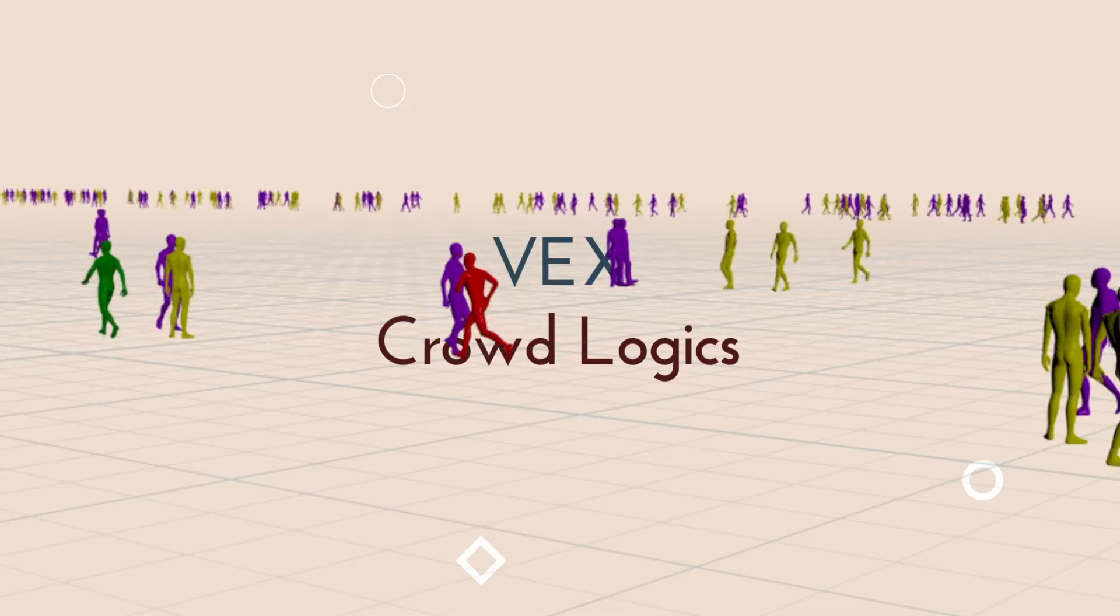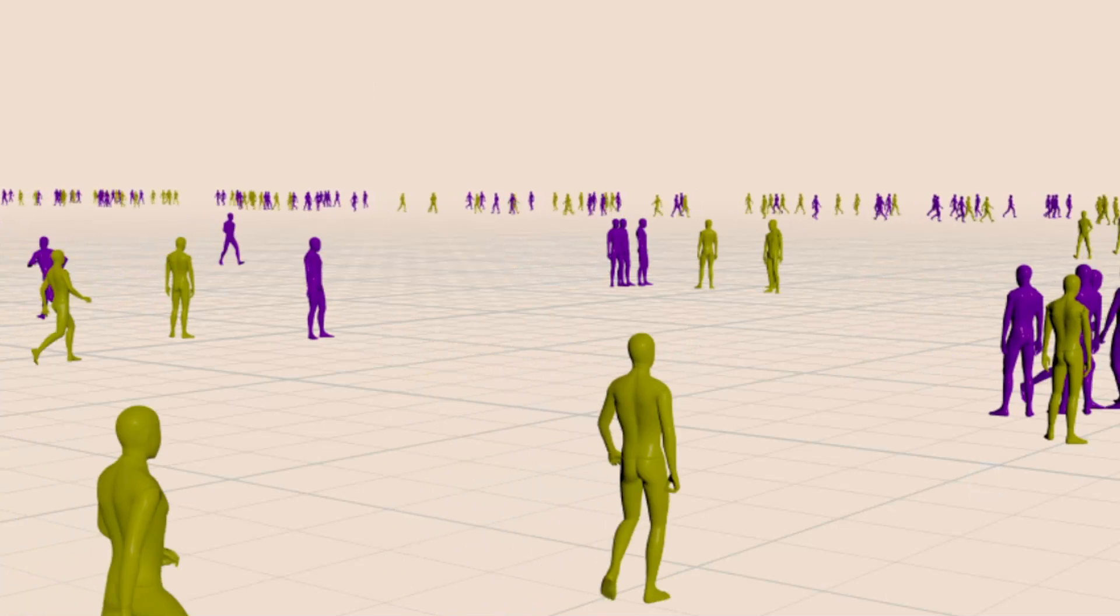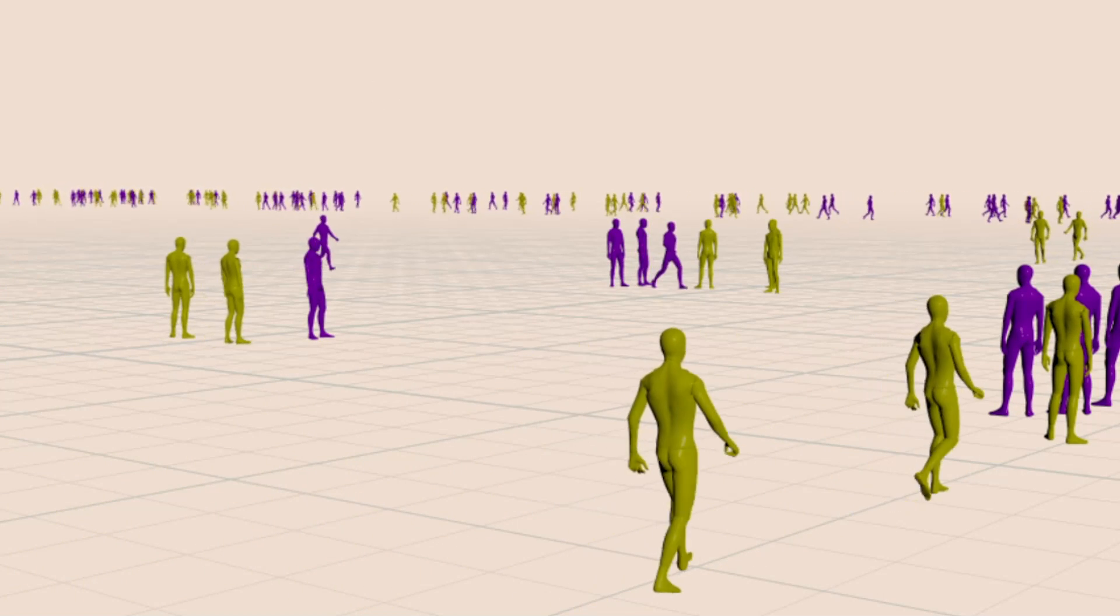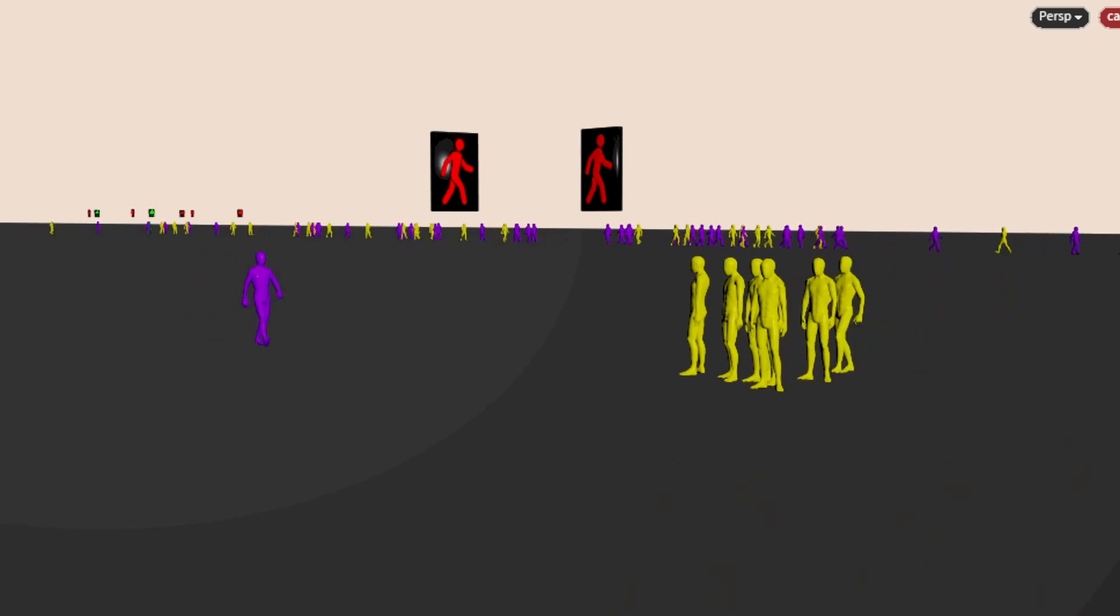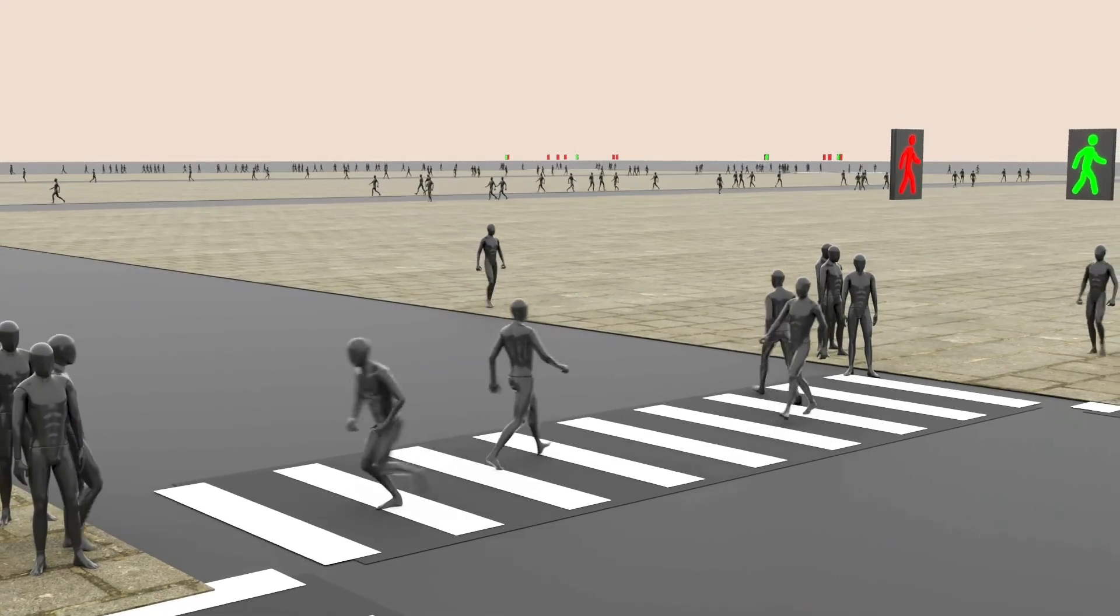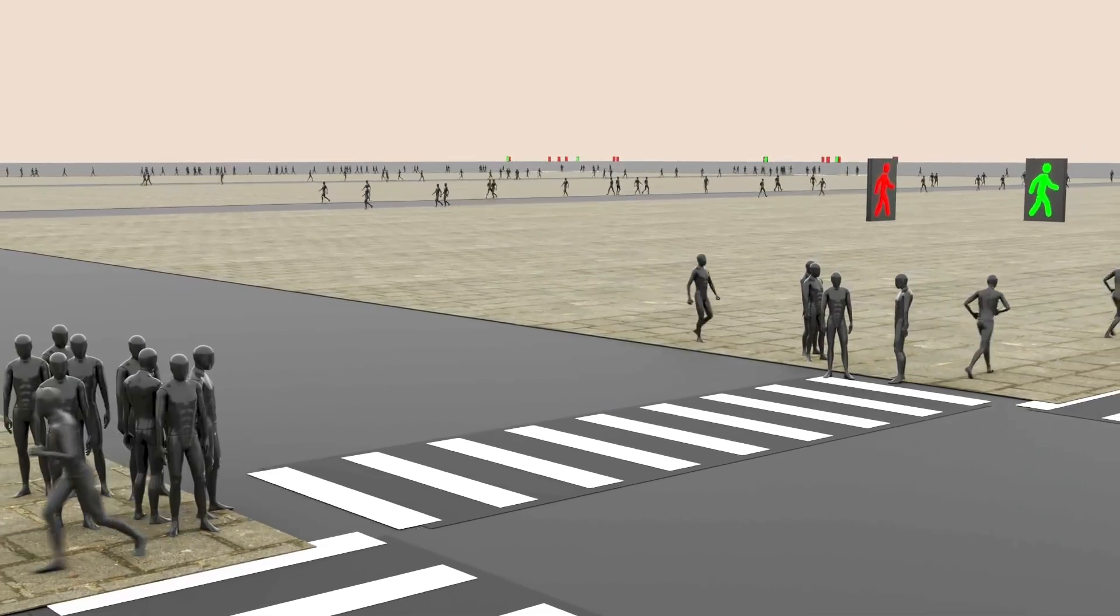We will add a lot of realistic pedestrian behaviors. For example, these crowds are running because the traffic lights are going to turn red very soon.